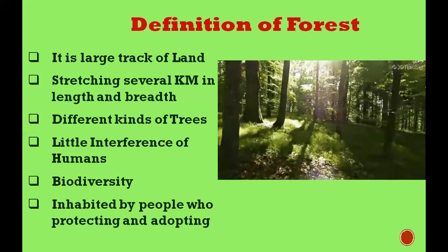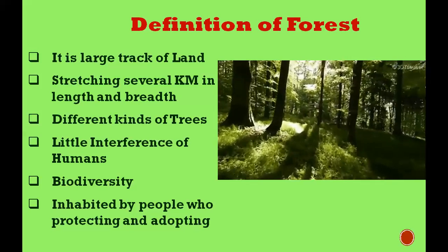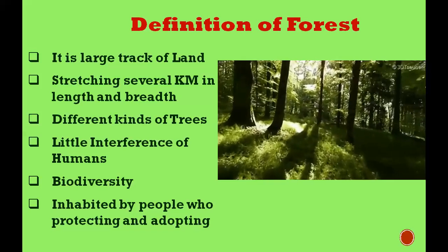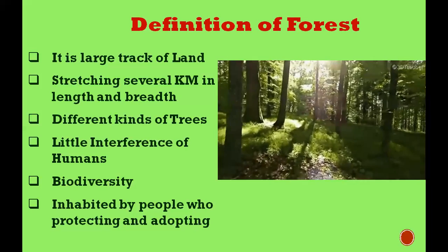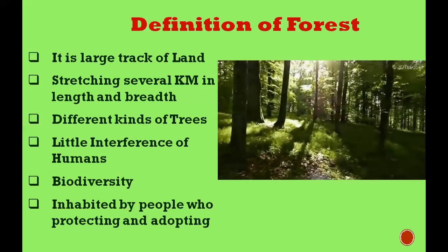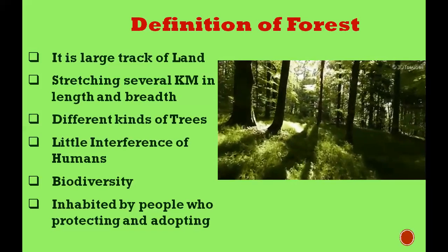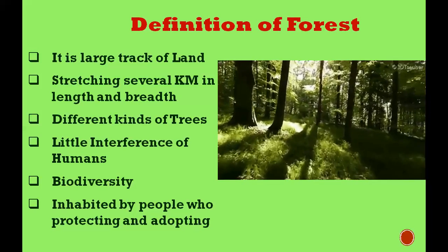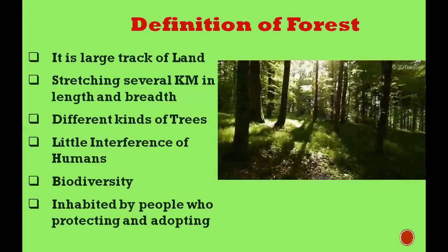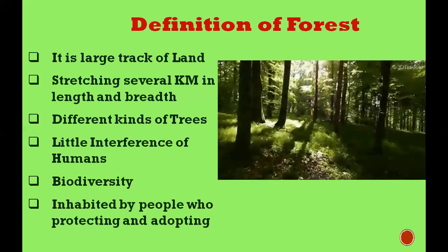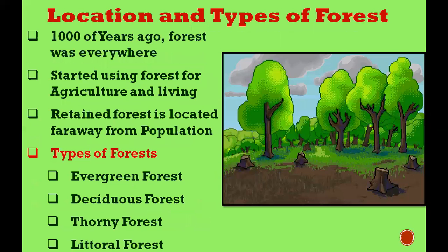The third feature is biodiversity — we should find many kinds of plants and animals living and breeding naturally without any interference. The fourth feature is that in India, most forests are inhabited by people who live in them and adopt themselves to the conditions of the forest — the tribal people. Any land satisfying these four features can be called a forest.